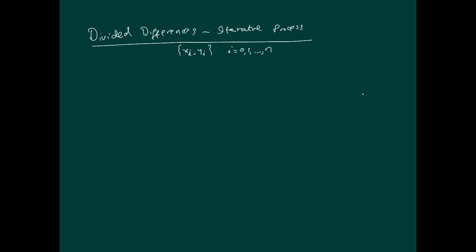Divided differences — iterative process. First, let's define some notation. We'll define f[xi], and we'll say that's equal to the output. These square brackets are indicative of basically applying the function — the approximation — which is the data points. Either it's a function we're given or it's the data points we're given, all the way through from 0, 1, 2, up to n.